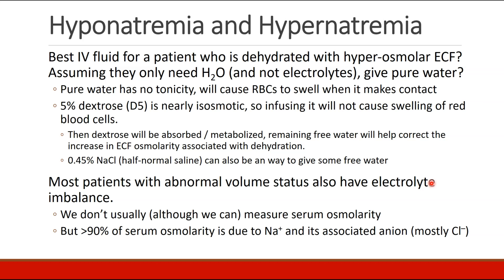An alternative would be to give the patient 0.45% sodium chloride or half normal saline — that would be giving the patient some normal saline together with some free water. This all makes sense in a theoretical way, but most patients who have an abnormal volume status also have an electrolyte imbalance.